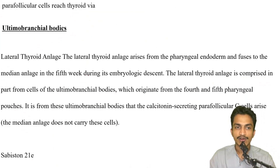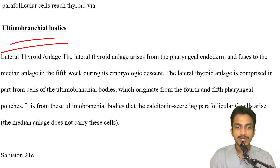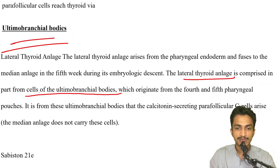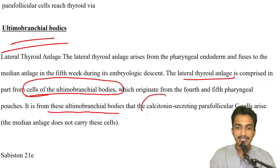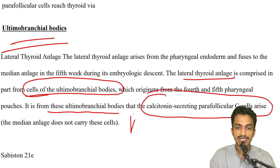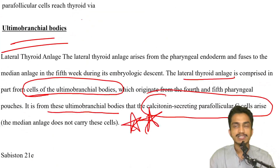Thyroid anatomy from Sabiston: parafollicular C cells reach the thyroid via the ultimobranchial body. The lateral thyroid anlage is composed of cells of the ultimobranchial bodies, and from these the calcitonin-secreting parafollicular C cells arise. So parafollicular cells reach the thyroid via the ultimobranchial body.